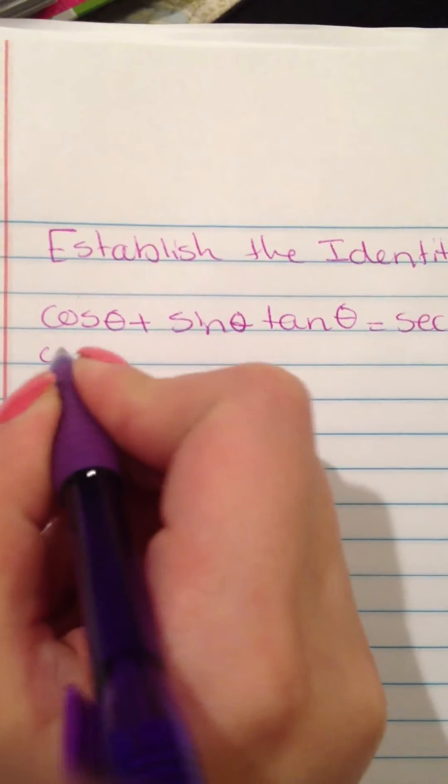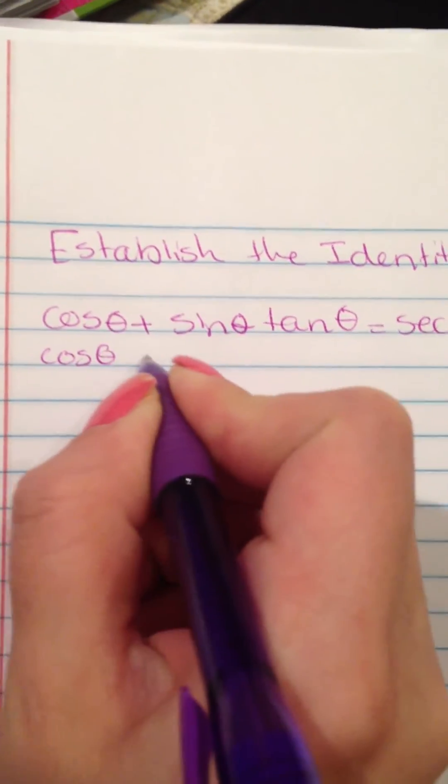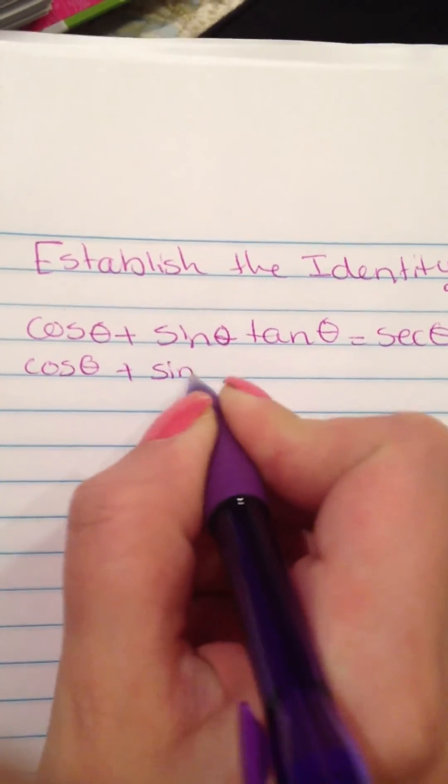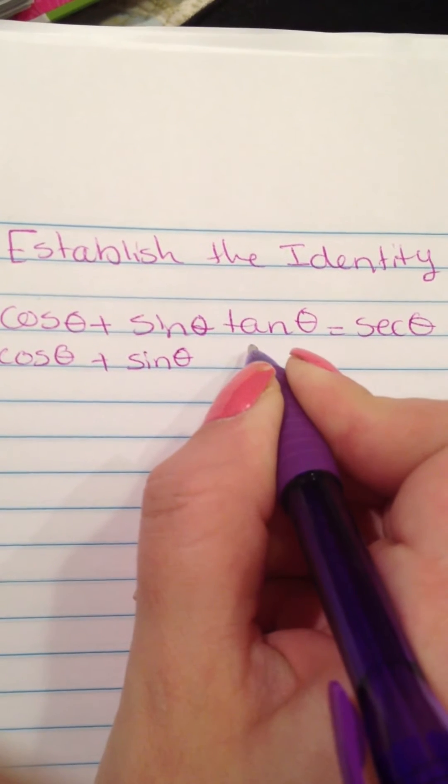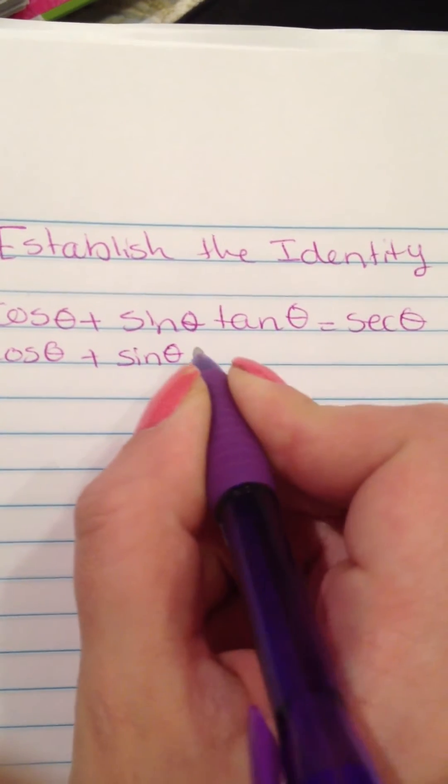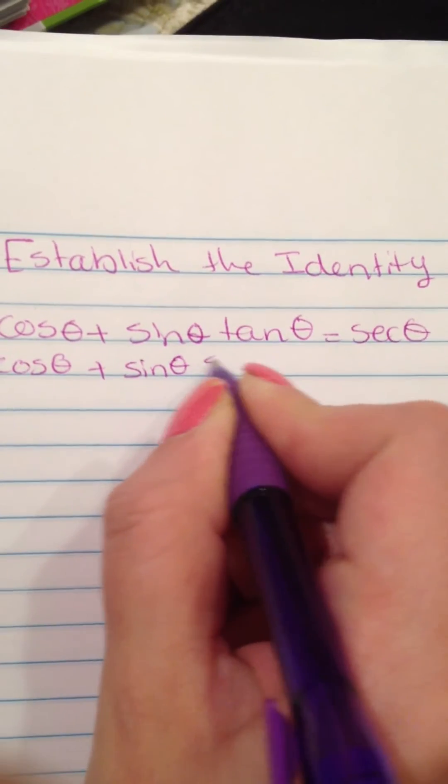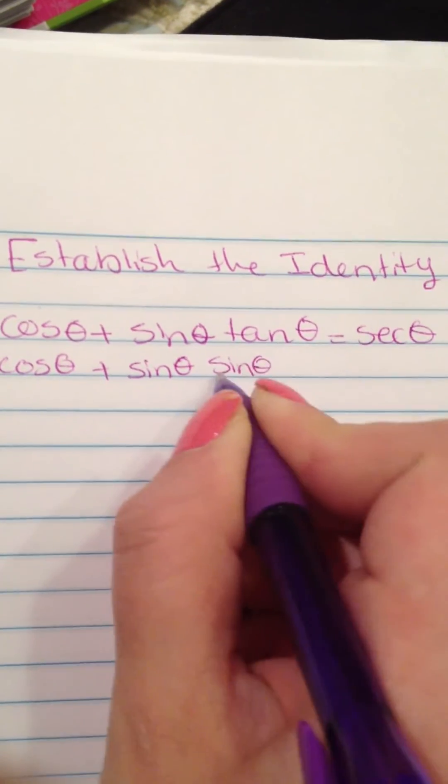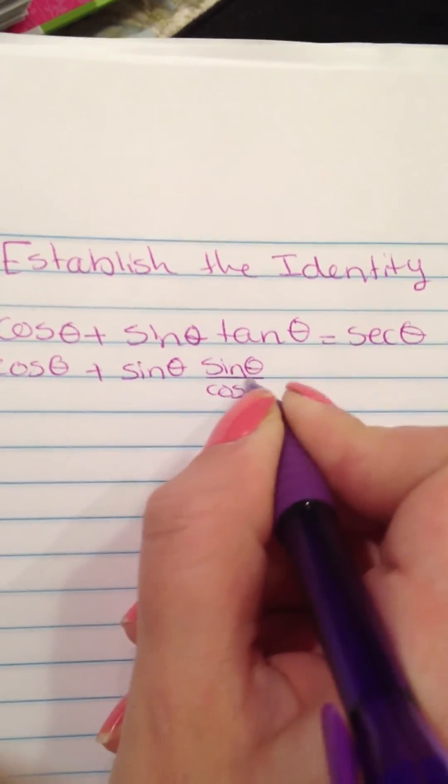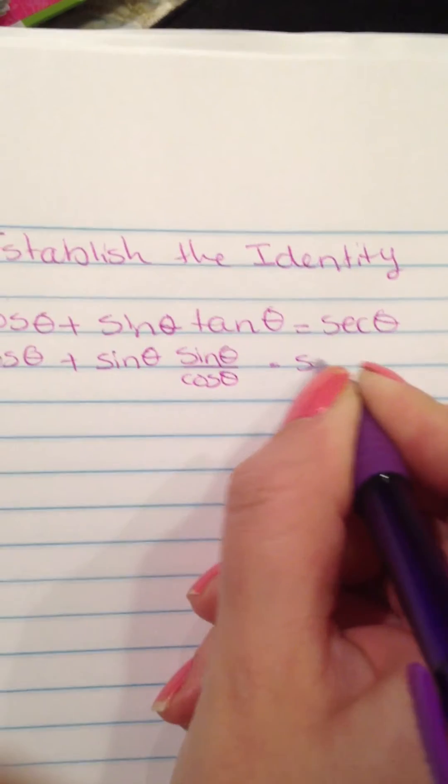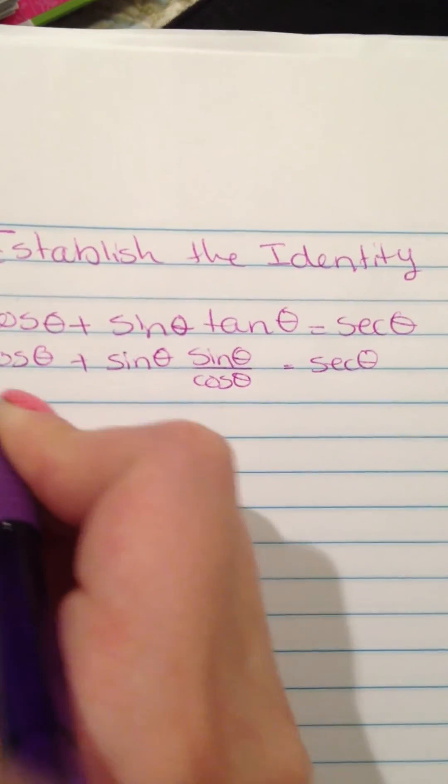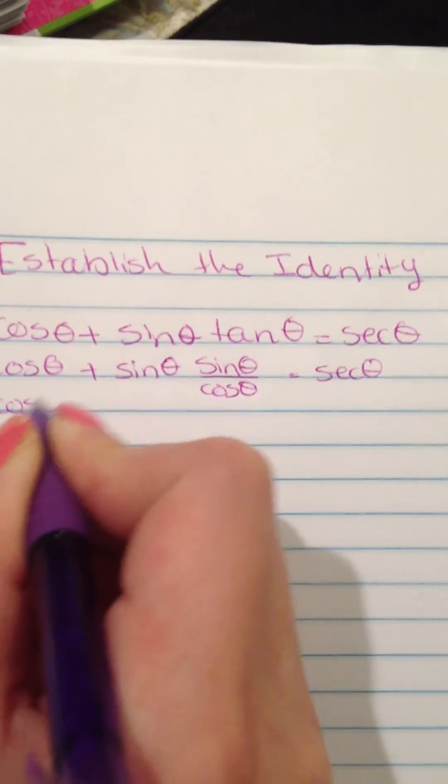Establish the identity cosine of theta plus sine of theta times tangent of theta equals secant of theta. Cosine is just cosine of theta plus sine of theta. And then tangent is the same as sine over cosine of theta, so sine of theta over cosine of theta, which equals secant of theta.